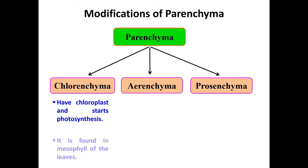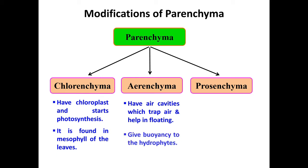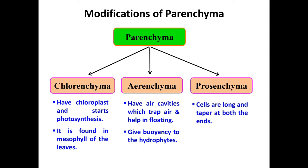Chlorenchyma is found in the mesophyll cells of the leaves. Aerenchyma is the type of parenchyma tissue which has air cavities and helps in floating; thus aerenchyma gives buoyancy to hydrophytes such as hydrilla plants. In prosenchyma, the parenchyma cells become long and tapered at both ends, and prosenchyma is found in the pericycle of some plants.